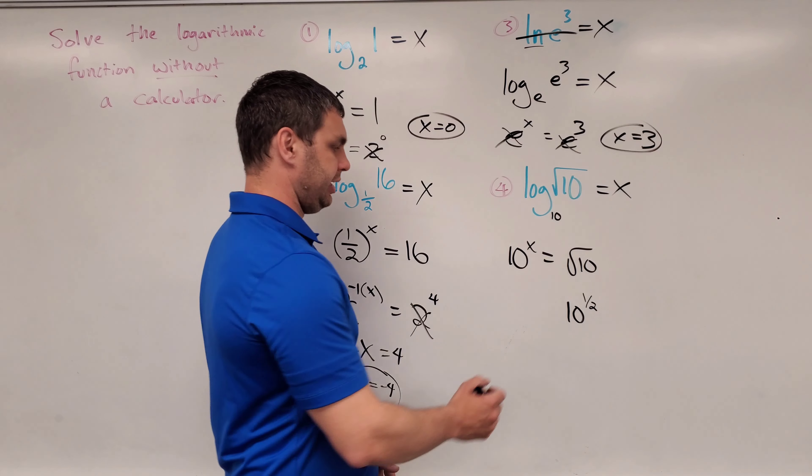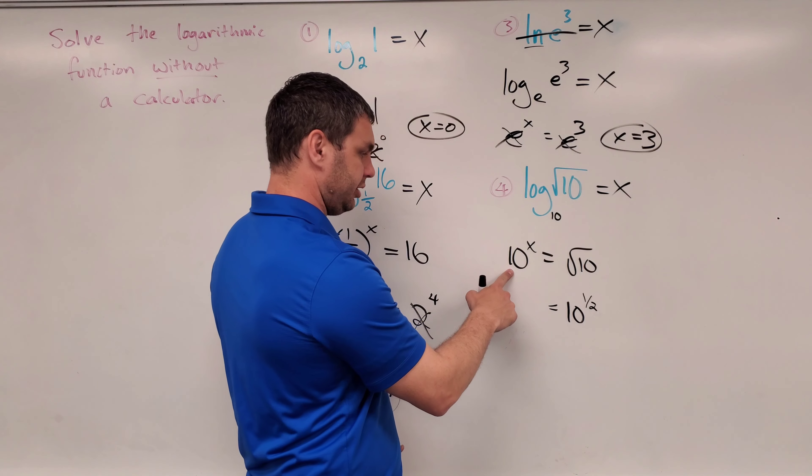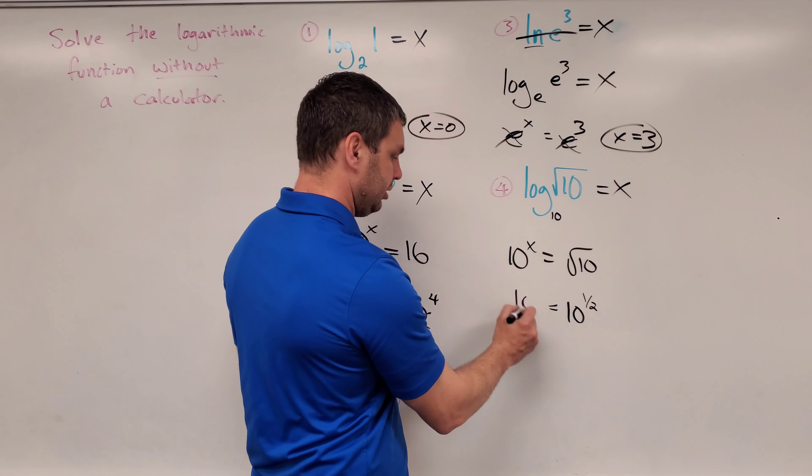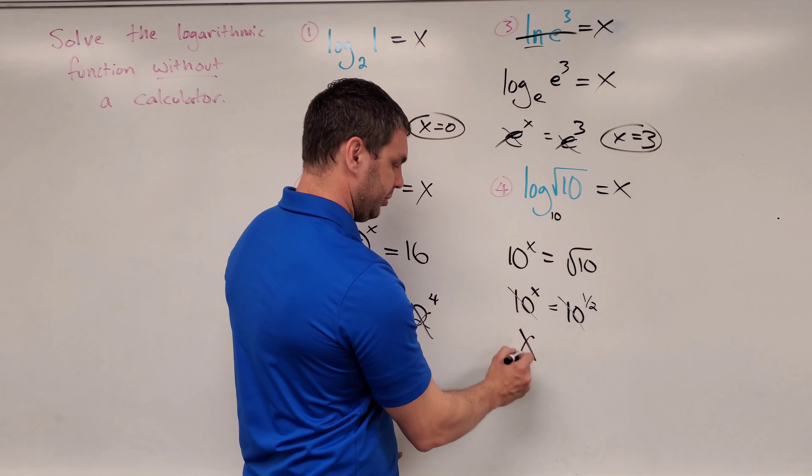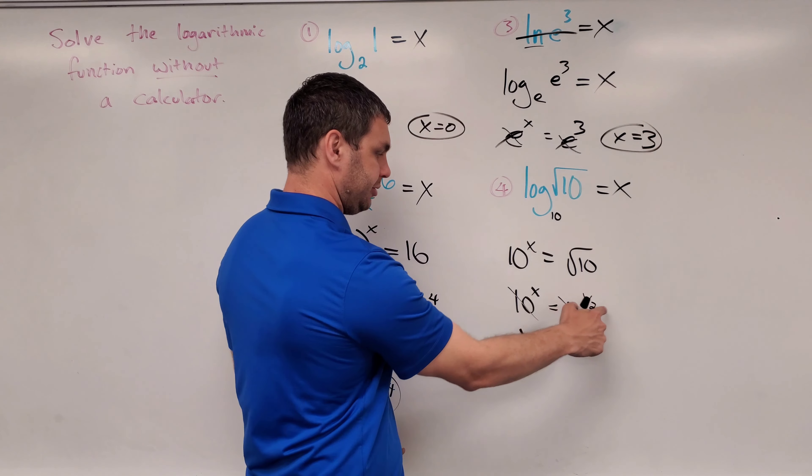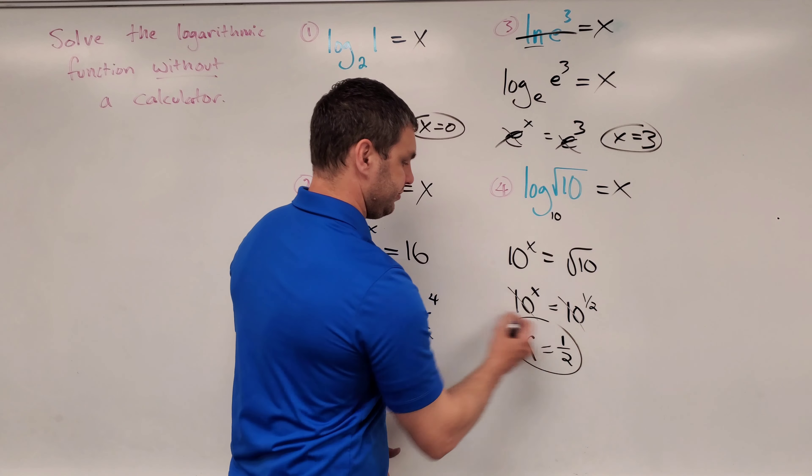10 raised to the one half, which is nice because the other side is also 10 raised to the power of x. And so now they're the same. They're going to cancel, leaving me with just the exponents x equals one half.